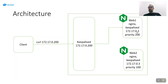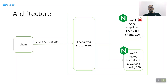What will keepalived create? web1 will have an IP address of 172.17.0.2 while web2 has 172.17.0.3. During keepalived configuration I will create another IP called a virtual IP — this will be 172.17.0.200. This virtual IP will be attached to web1 because it has higher priority, and whenever something goes wrong in web1 it will fail over to web2, making the microservice highly available.